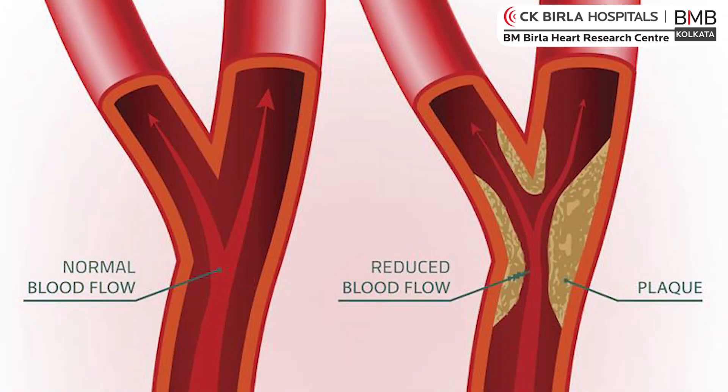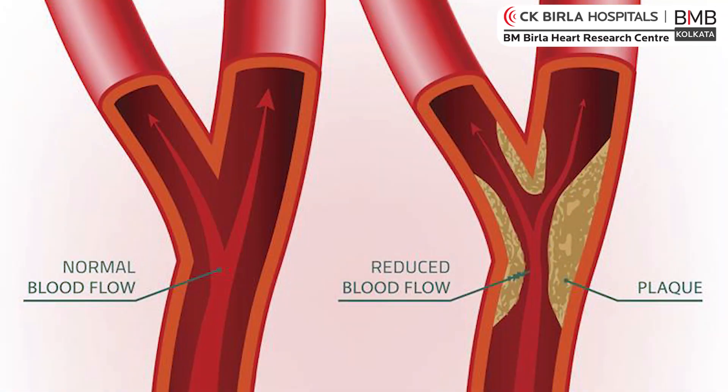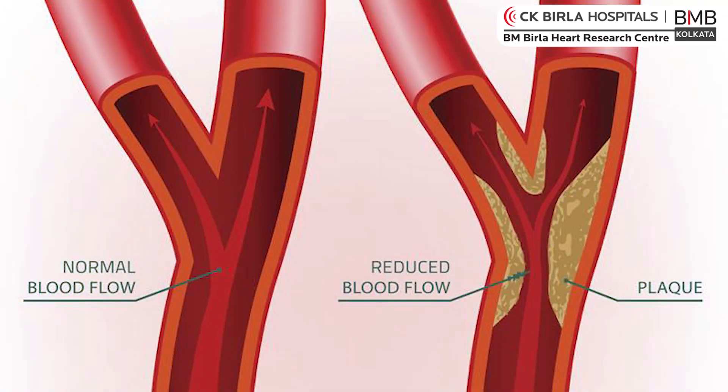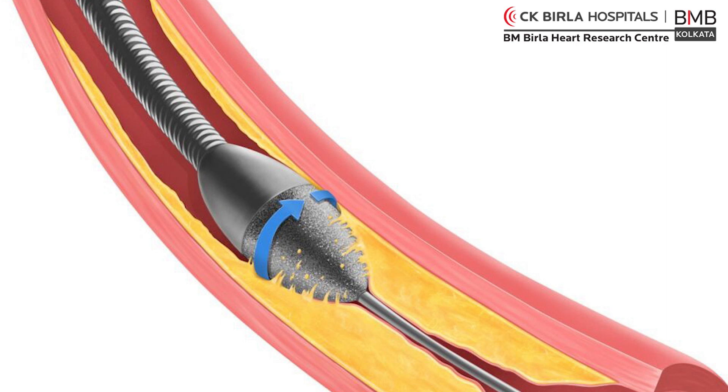We also ascertain the amount and type of blockage. For example, if there is calcium in the blockage, normal balloon angioplasty won't help the patient. We have to use atherectomy procedures like rotablation, orbital atherectomy, intravascular lithotripsy (IVL), or even laser in some cases.